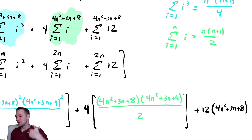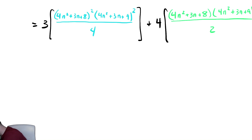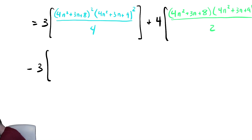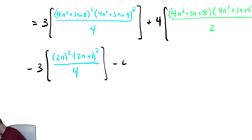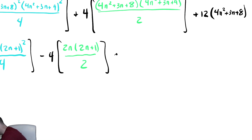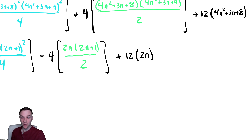Then we subtract the other three summations, plugging in 2n instead. So this is minus 3 times (2n squared times (2n plus 1) squared divided by 4), minus 4 times (2n times (2n plus 1) divided by 2), and the last summation from 1 to 2n of 12 gives 12 times 2n.